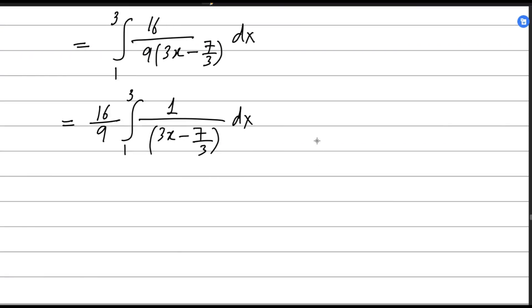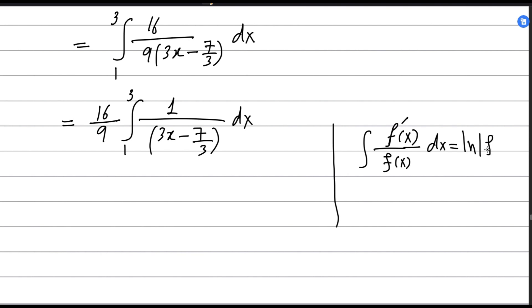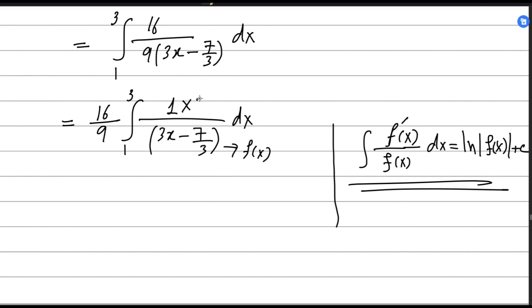A very important integration formula: if you have a function in the denominator and the numerator is its derivative, then the integral of f prime of x over f of x dx equals log of f of x plus c. Here the function is 3x minus 7 over 3, and its derivative is 3, so the numerator needs to be 3. We multiply the integrand by 3 and compensate by dividing by 3 outside, to match this formula. Now we can apply it.